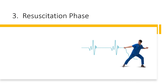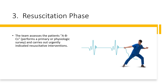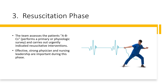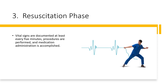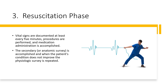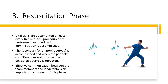Resuscitation Phase. The team assesses the patient's ABCs, performs a primary or physiologic survey, and carries out urgently indicated resuscitative interventions. Effective, strong physician and nursing leadership are important during this phase. There should be one dominant voice, and information is continuously directed toward team leadership. Vital signs are documented at least every five minutes, procedures are performed, and medication administration is accomplished. The secondary, or anatomic, survey is accomplished, and when the patient's condition does not improve, the physiologic survey is repeated. Effective communication between team members and leadership is an important component of this phase.